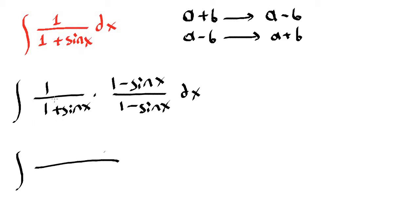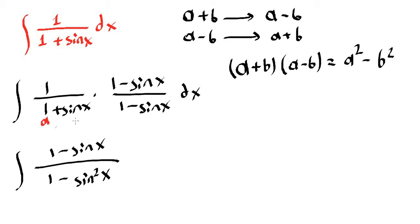So we obtain 1 times 1 minus sine of x which is 1 minus sine of x on top, and on the bottom we obtain 1 minus sine squared of x because this is difference of two squares which is a plus b times a minus b equals a squared minus b squared. Here our a term is 1, b term is sine of x.